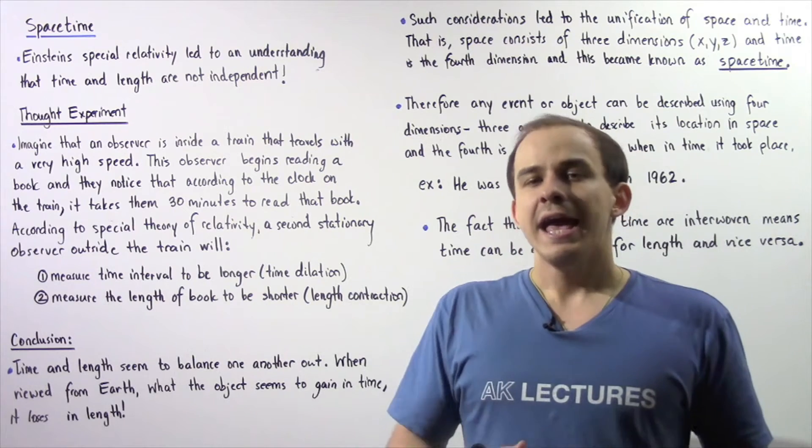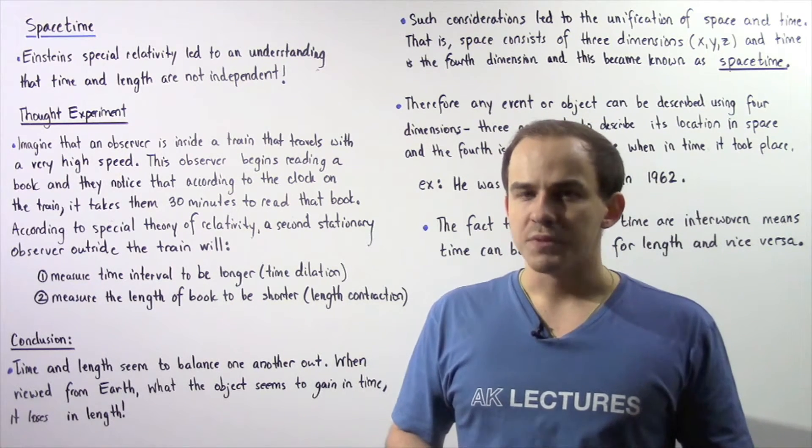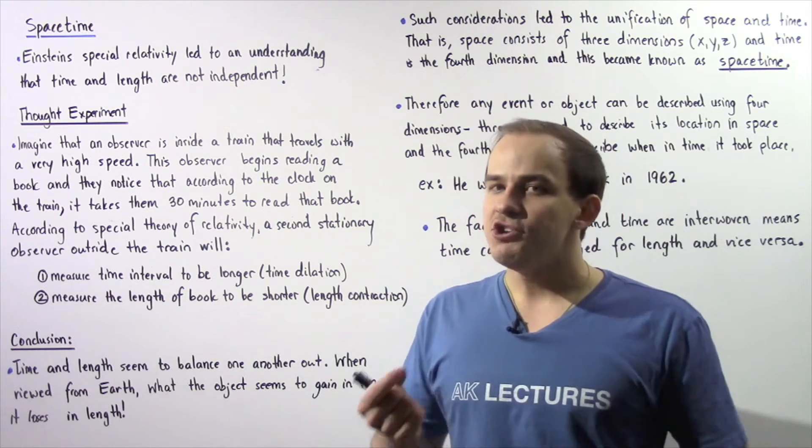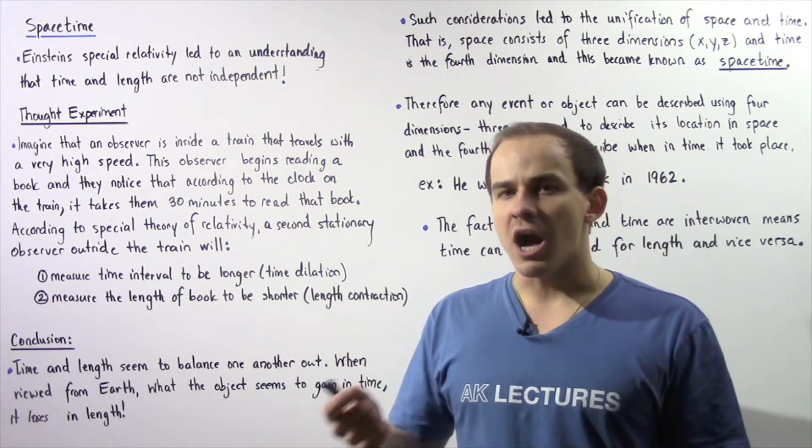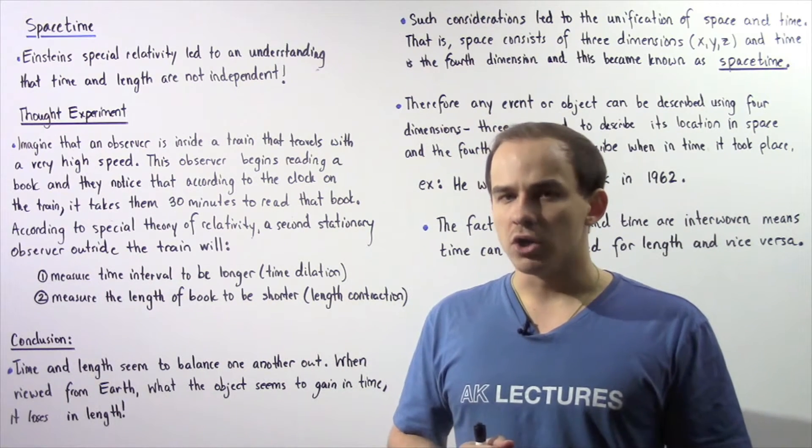The velocity of the train is very close to the velocity of light in a vacuum. Now this observer inside the train begins reading a book and notices, according to the clock on the train, it takes them 30 minutes to read that book.